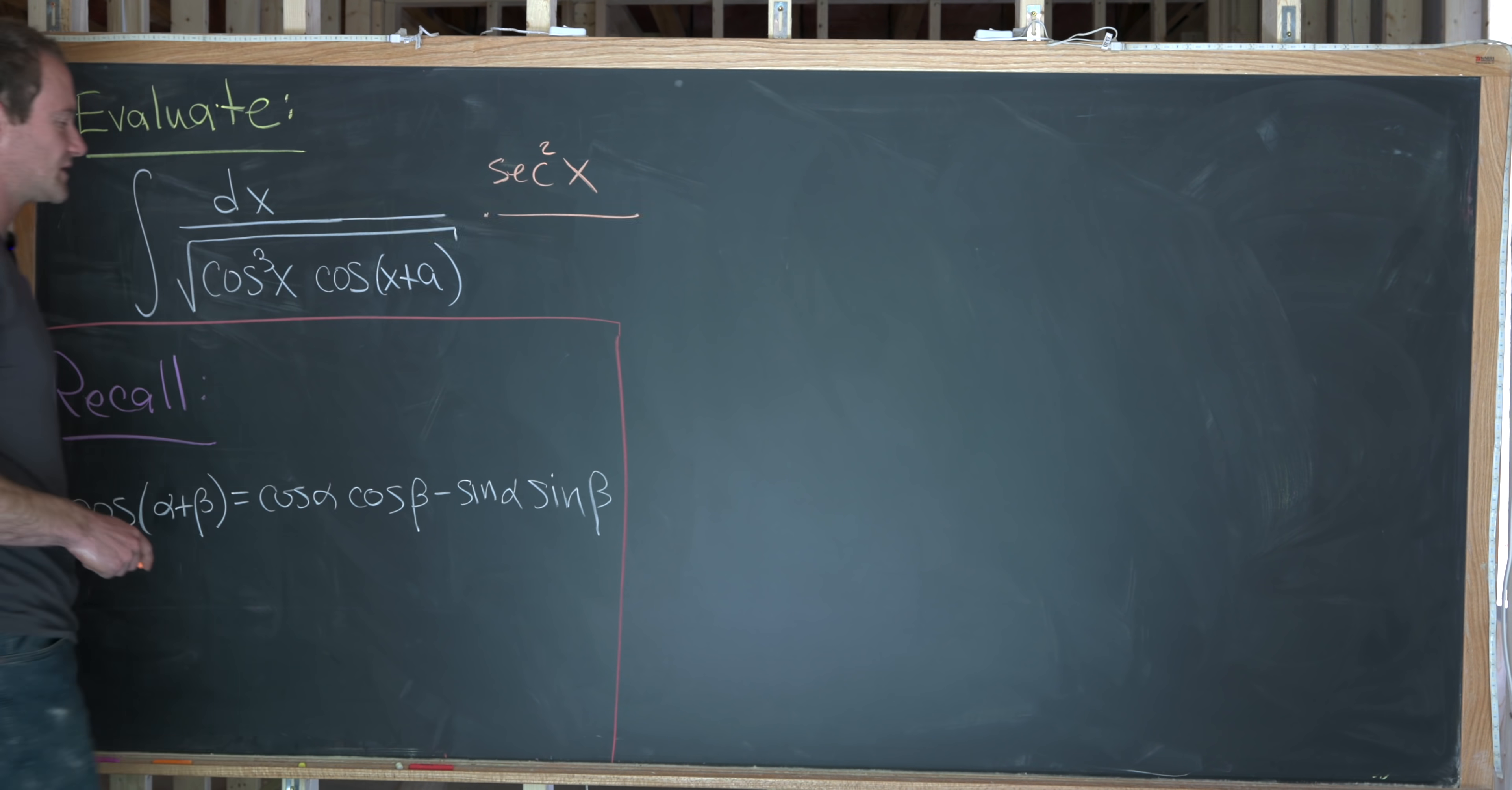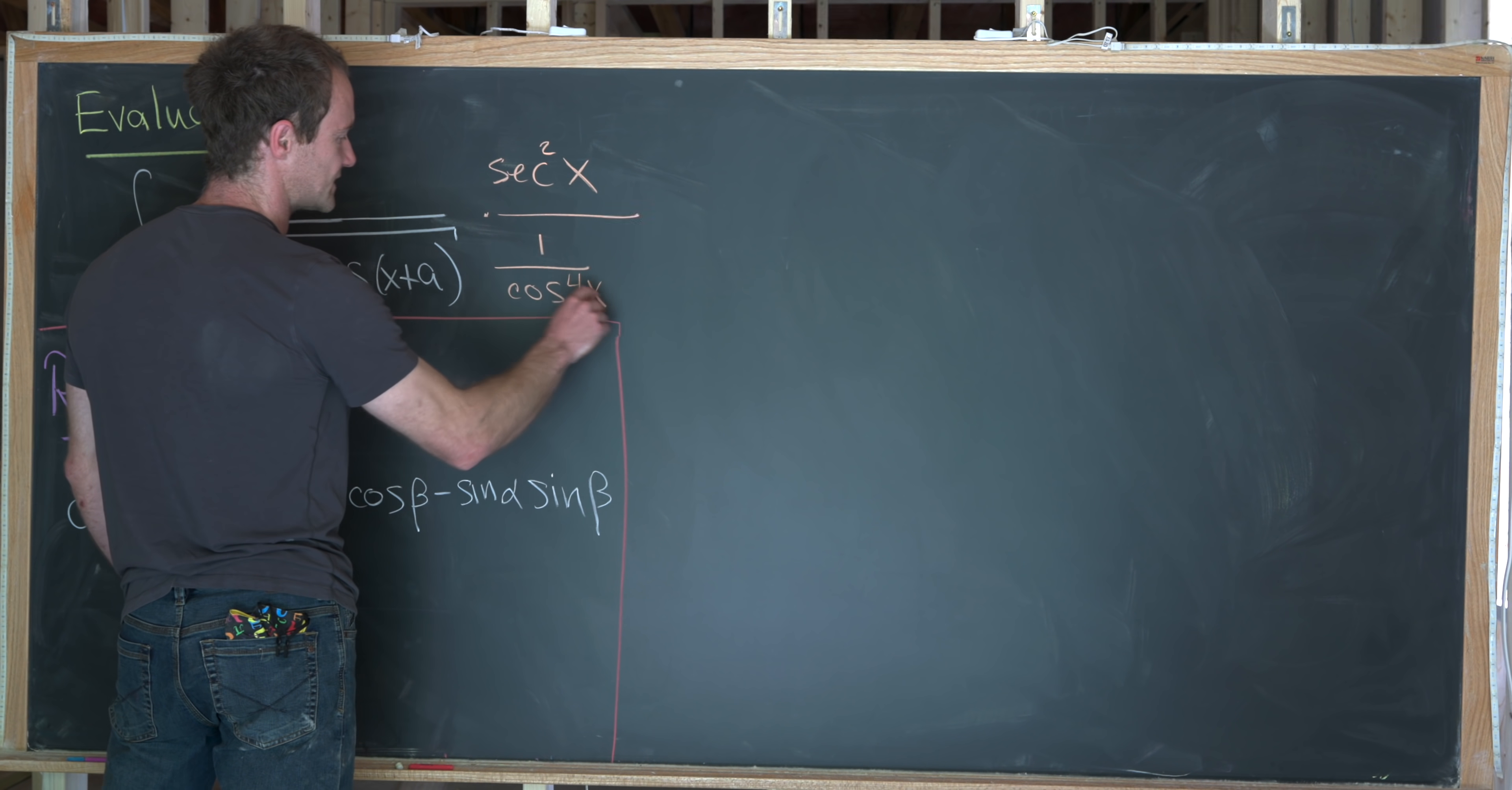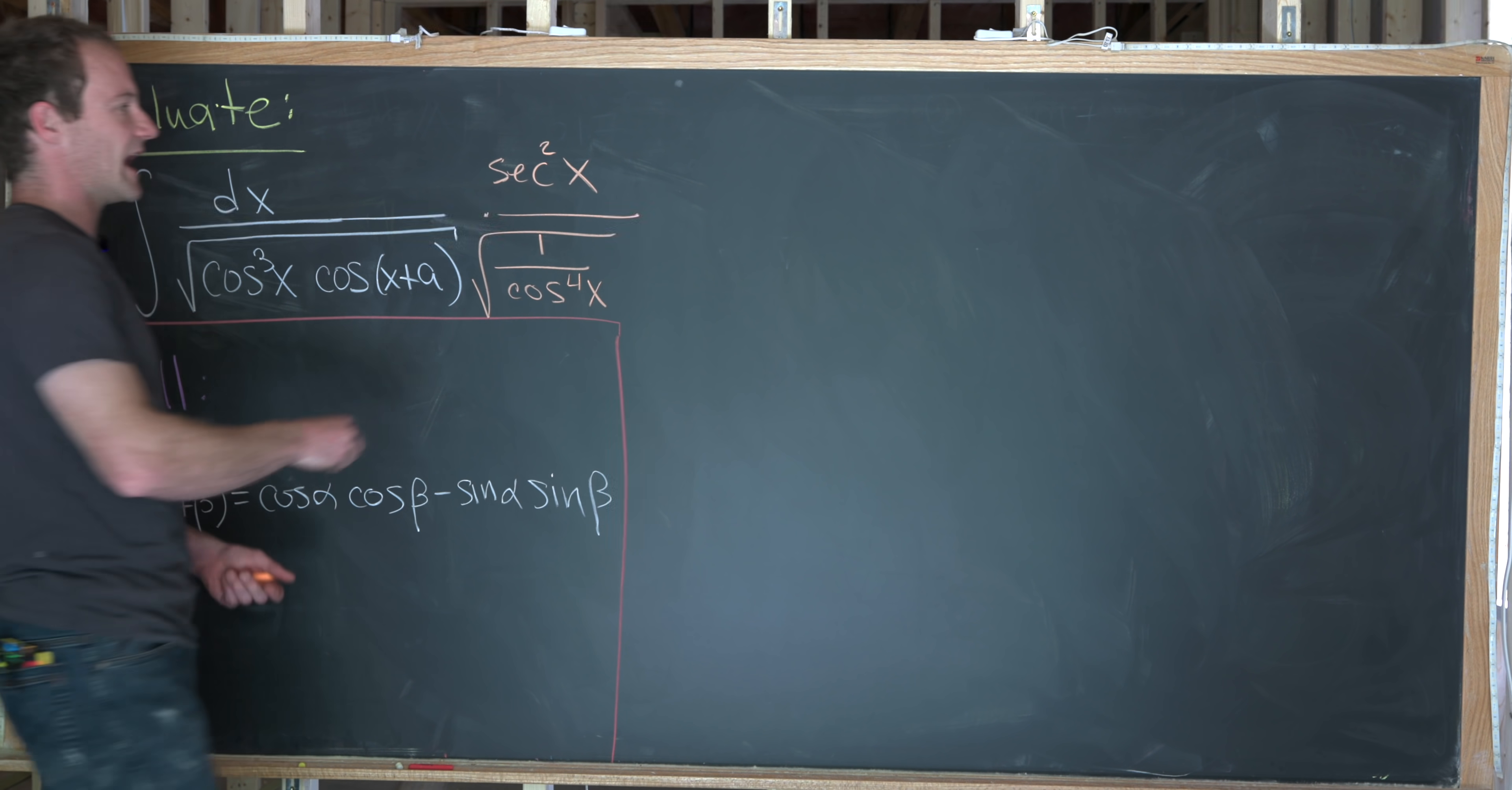But then when I multiply in the denominator, I'll multiply by one over cosine squared. But instead of writing one over cosine squared, I'll write one over cosine to the fourth under the square root. So that way, I can bring it inside of the square root pretty easily.